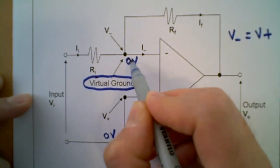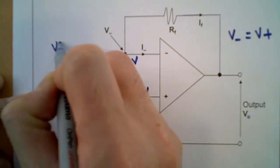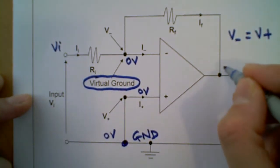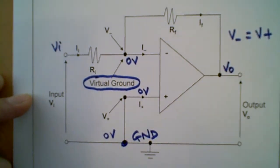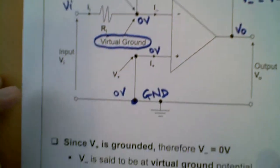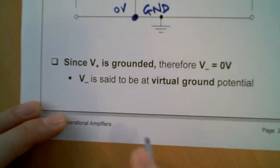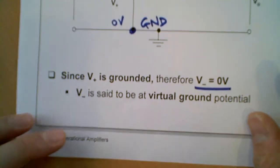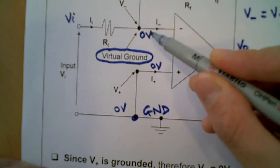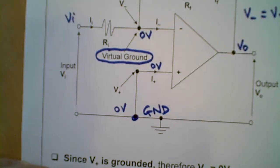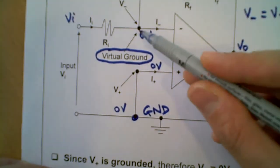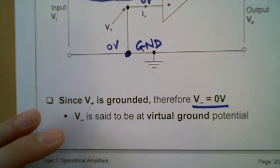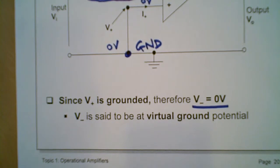So we know that the voltage here is zero. We know that the voltage here is VI, which is the input voltage. We know that the voltage here is V out. Now from here, since as I mentioned that the V plus is grounded, therefore your V minus also equals to zero volts, which is here. And your V minus is set to be at the virtual ground, as shown here.